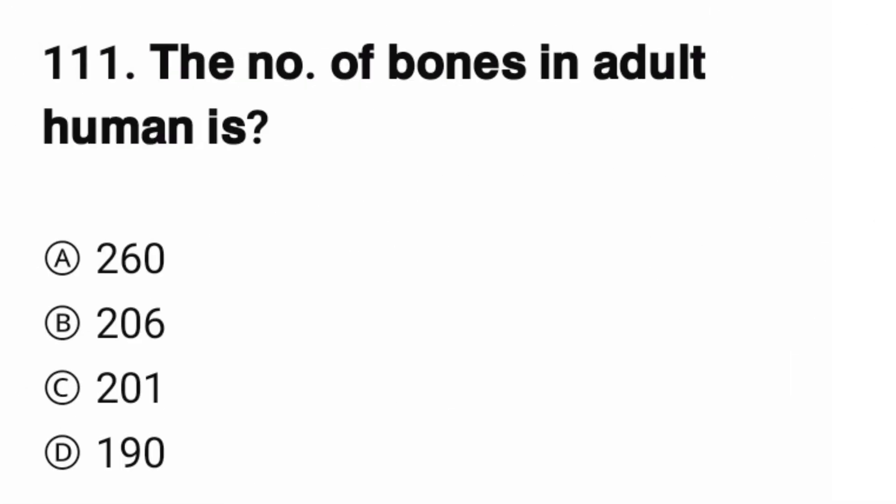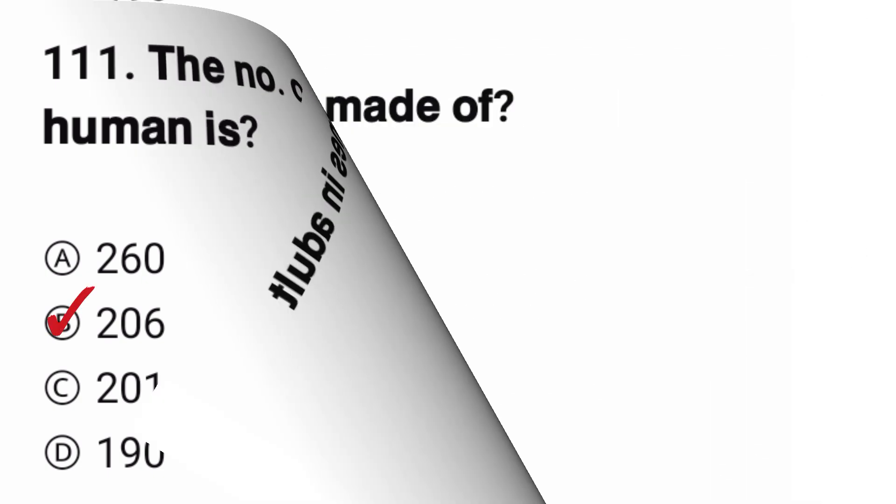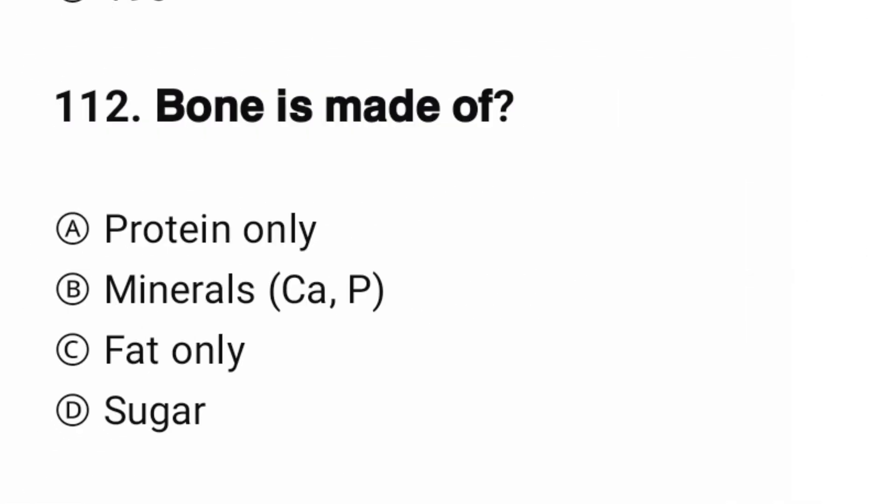Question number 111. The number of bones in an adult human is? The correct option is B, 206.